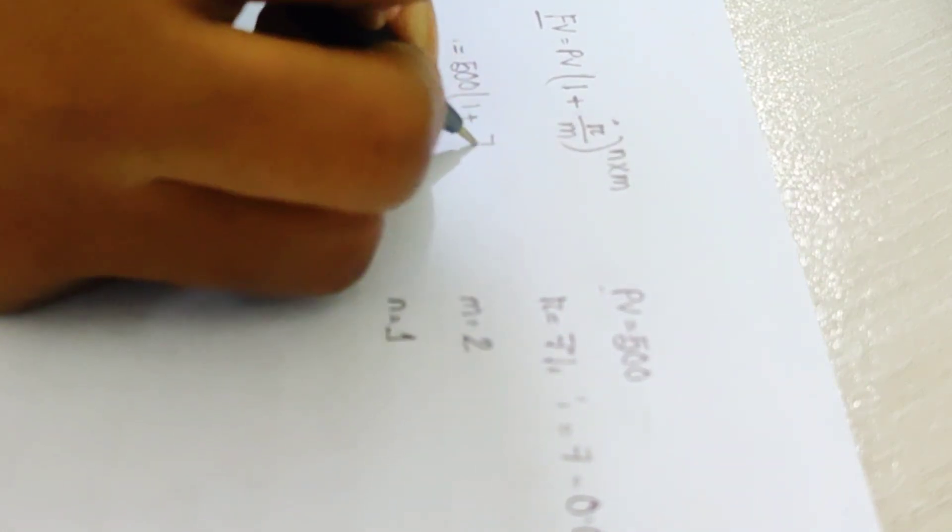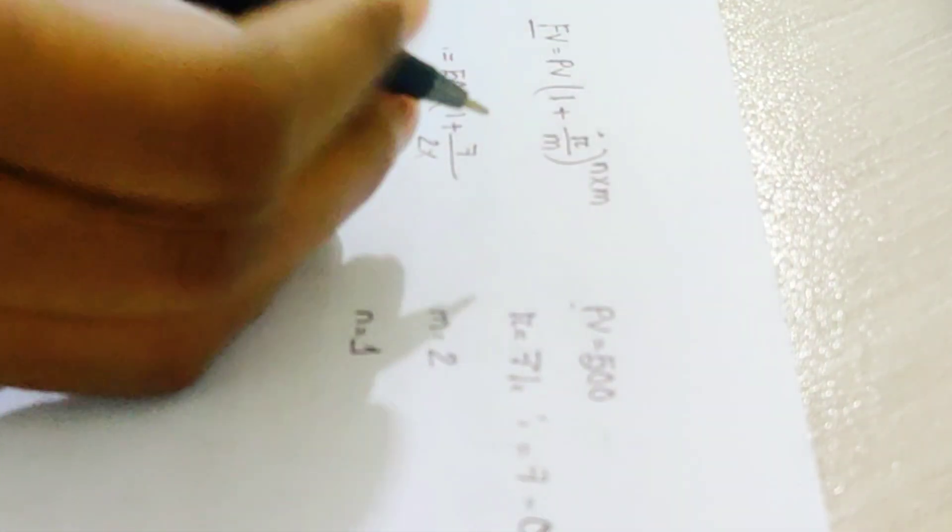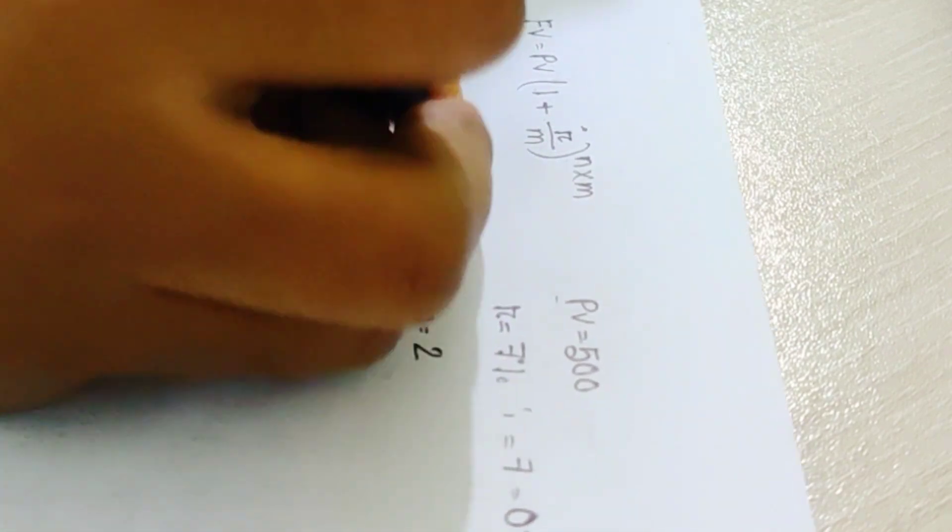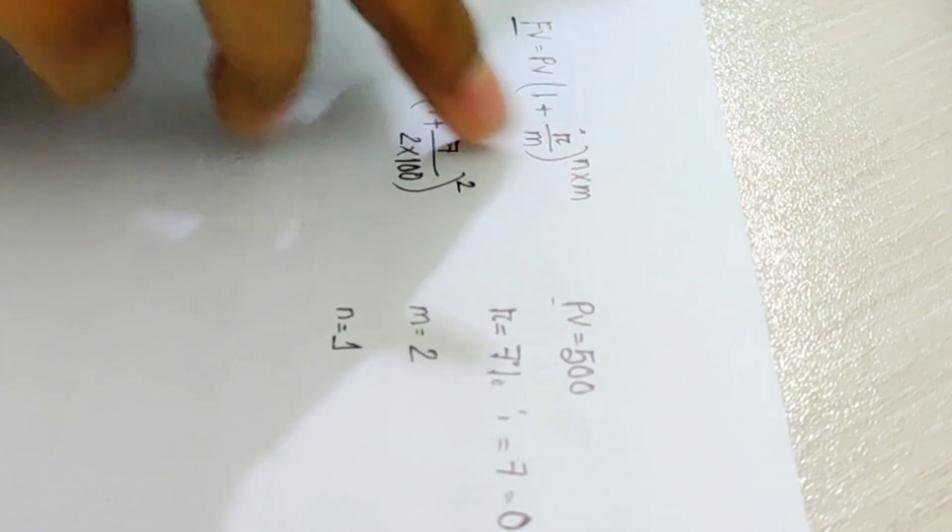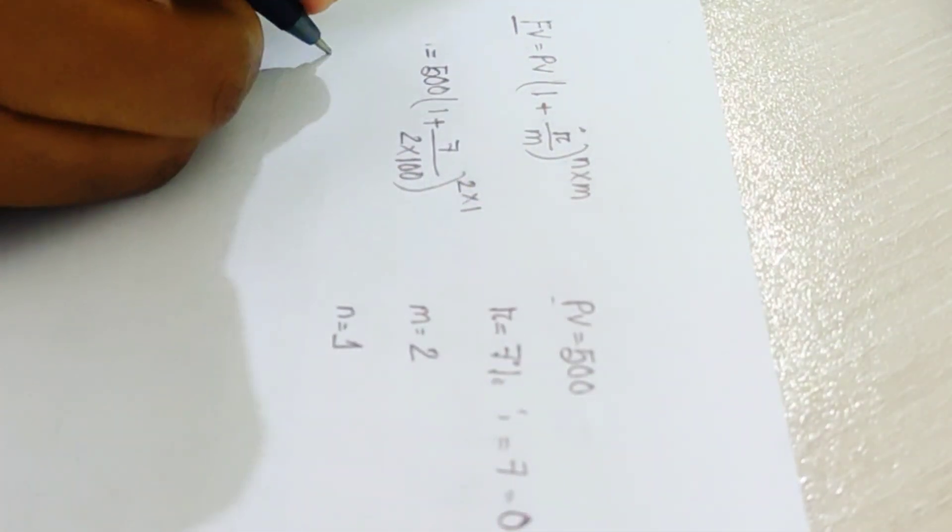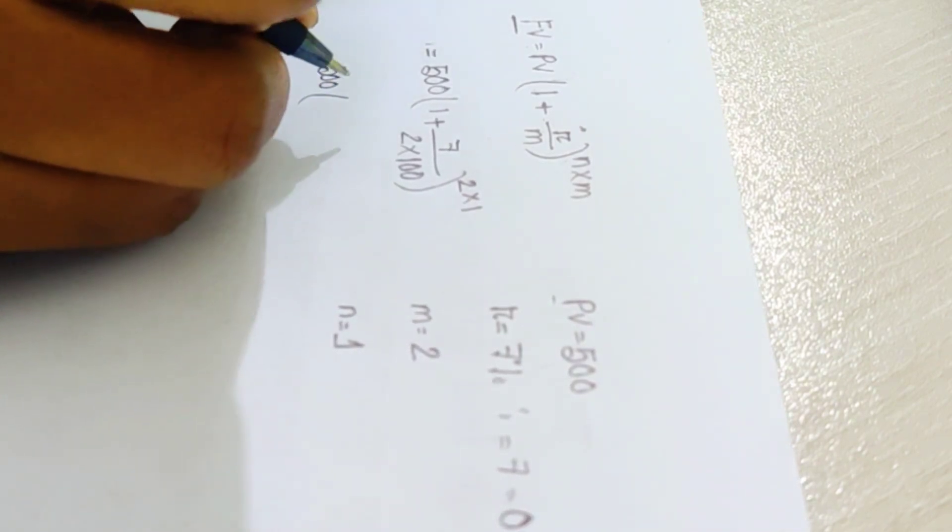So here m is 2 and n is 1. So we have PV which is 500, plus 1, plus the rate of interest 0.07. We use m to the 2, which is rate of interest. So in our way, we get 2. But we put n into 2, which is 1. And then we will put 1, plus 2 plus 2.